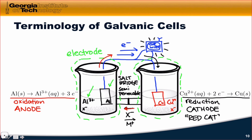You'll hear me refer to electrodes interchangeably as half-cells. Looking at a full galvanic cell, it should be clear why we call each of these a half-cell: we need two of them to generate a full galvanic cell — one as the electron donor, the anode, and one as the electron acceptor, the cathode.